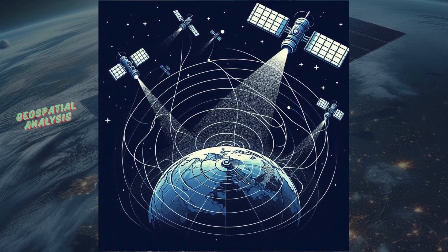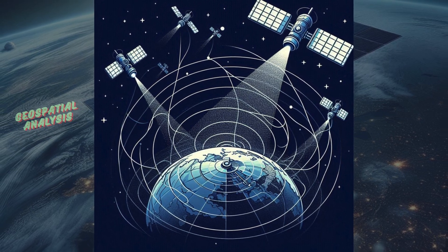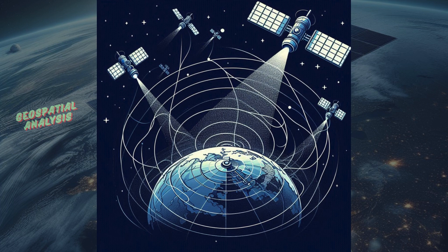The more satellites your receiver can see, the more accurate the positioning. Typically, four or more satellites are needed to get a precise location.